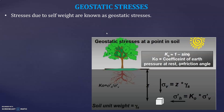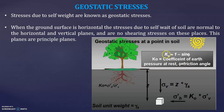Stresses due to self-weight are known as geostatic stresses — this you have already studied. K0 is the earth pressure at rest, equal to 1 minus sin φ, where φ is the friction angle. This applies to a soil mass located at a distance Z from the ground surface, where the unit weight of the soil is gamma into Z.